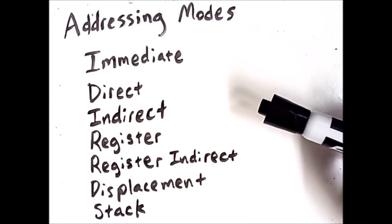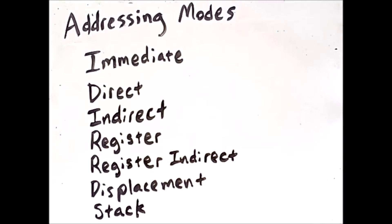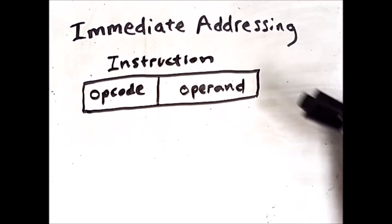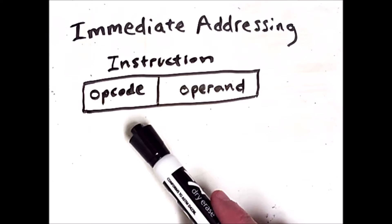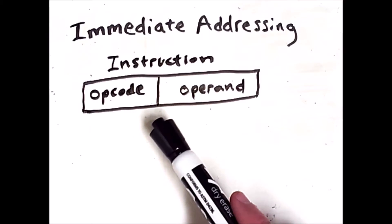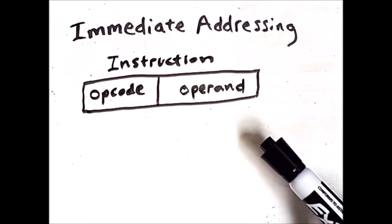The simplest addressing mode is immediate addressing, in which an operand is included directly in the machine code instruction. With immediate addressing, an instruction consists of some number of bits that define the opcode, and then other bits that define the actual operand.